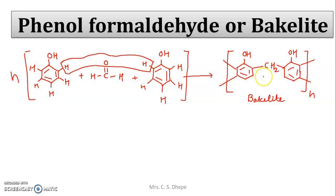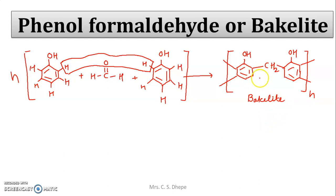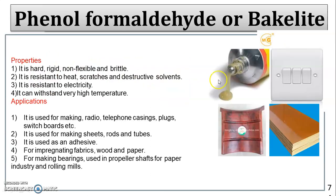In Bakelite, a cross-link structure is formed — it is not a linear chain structure. This cross-linking makes Bakelite strong and rigid. It is a copolymer formed by condensation polymerization.